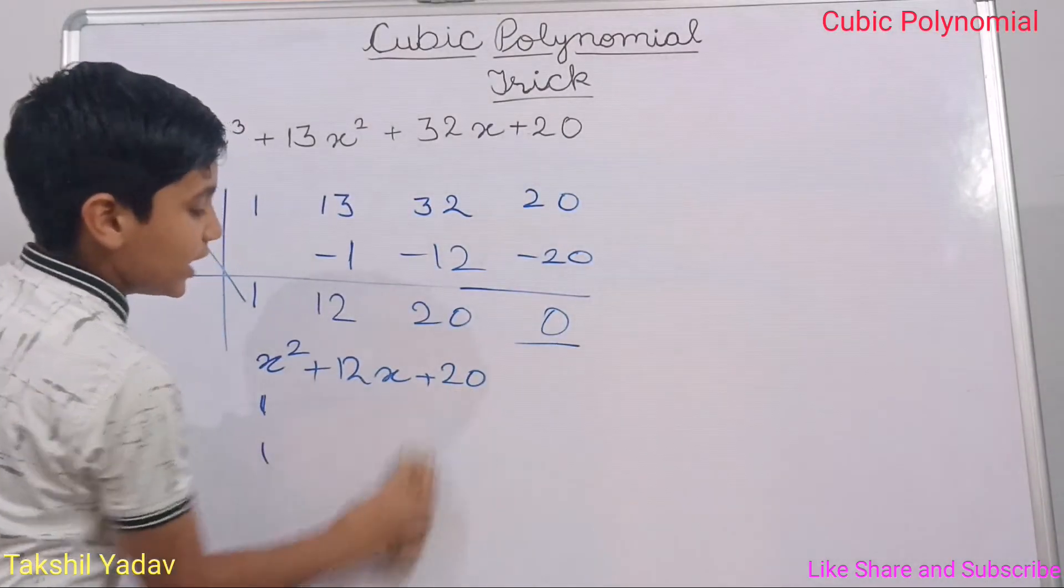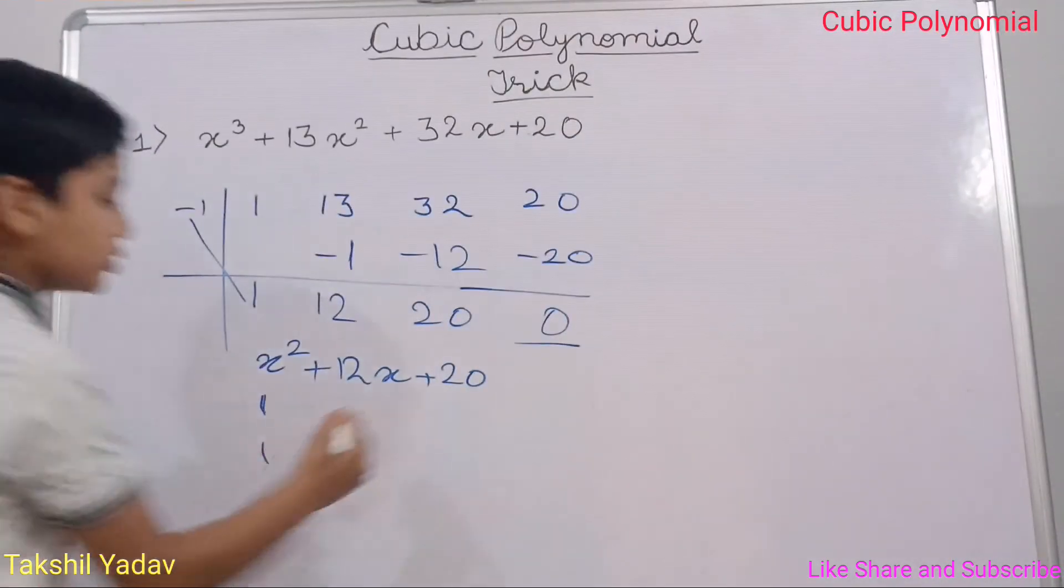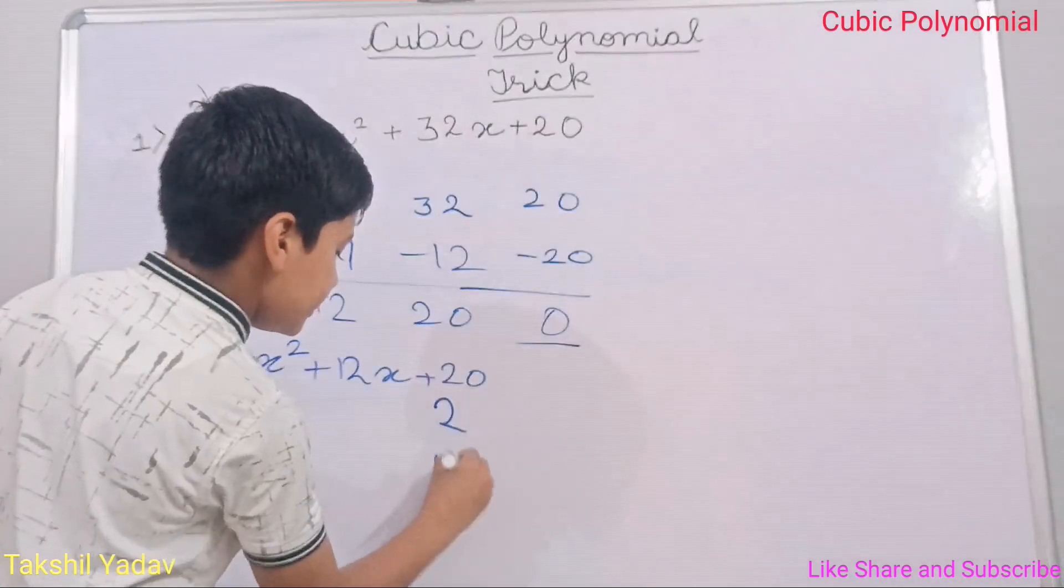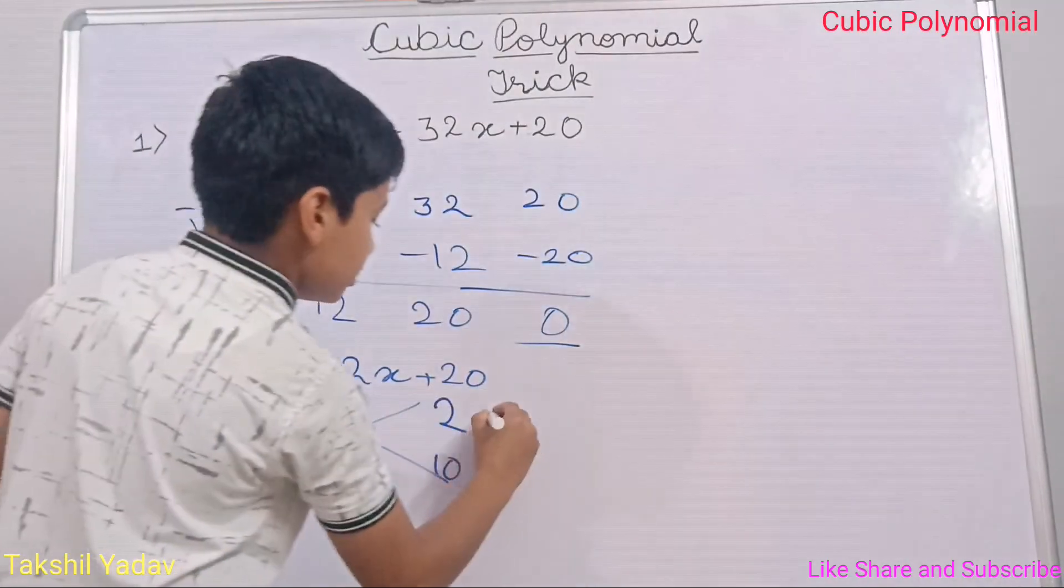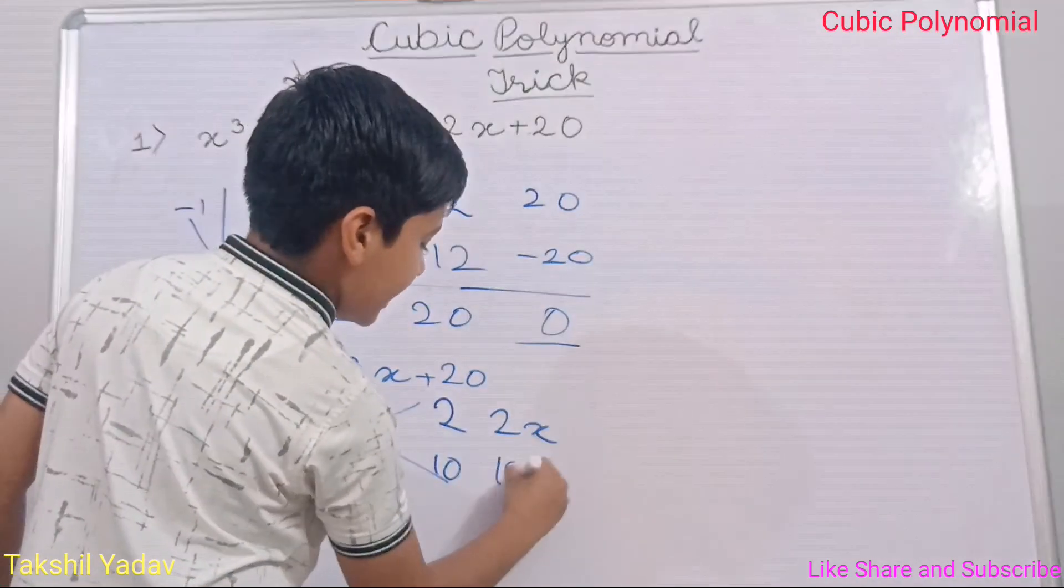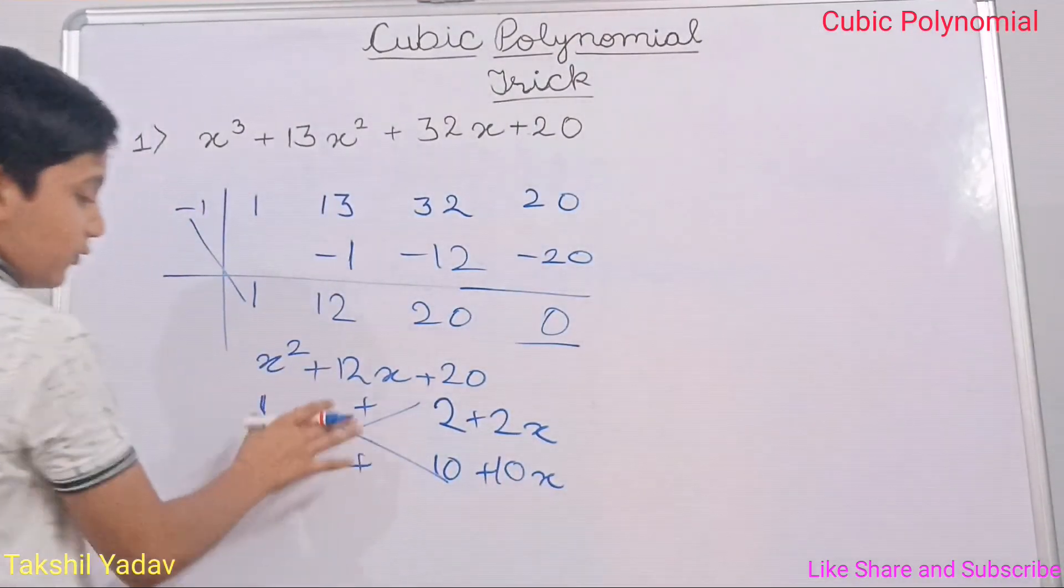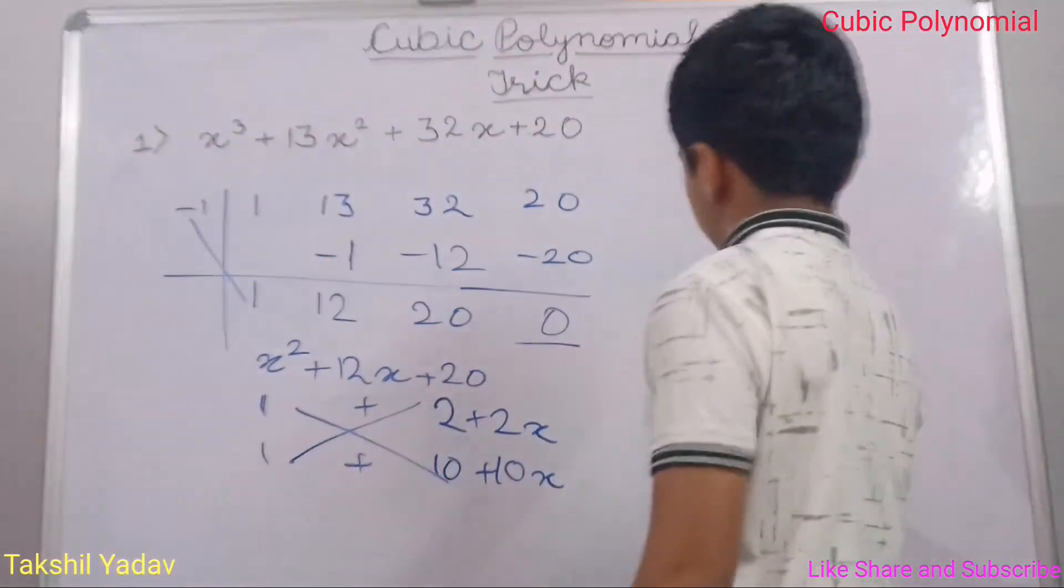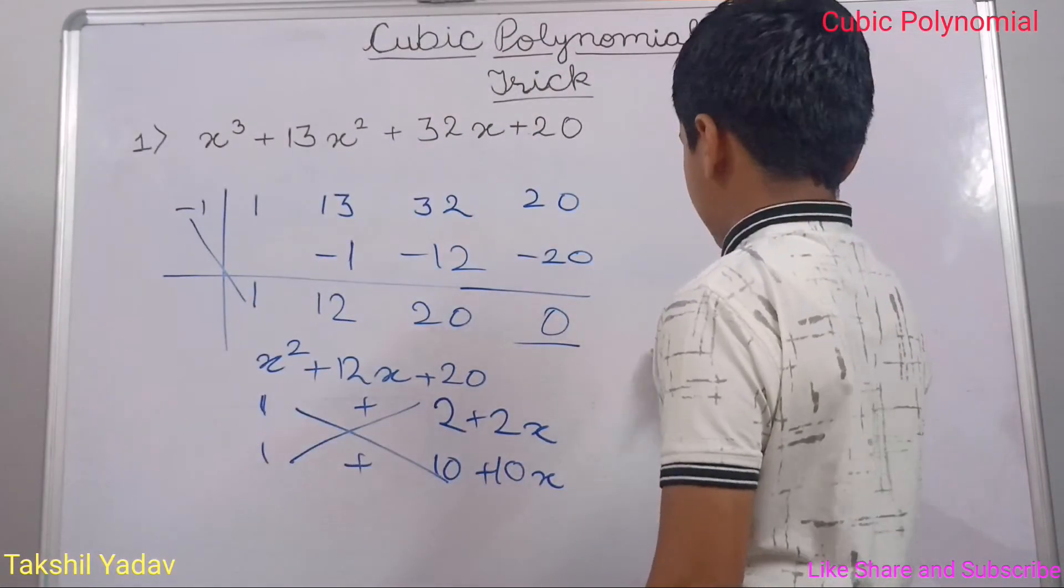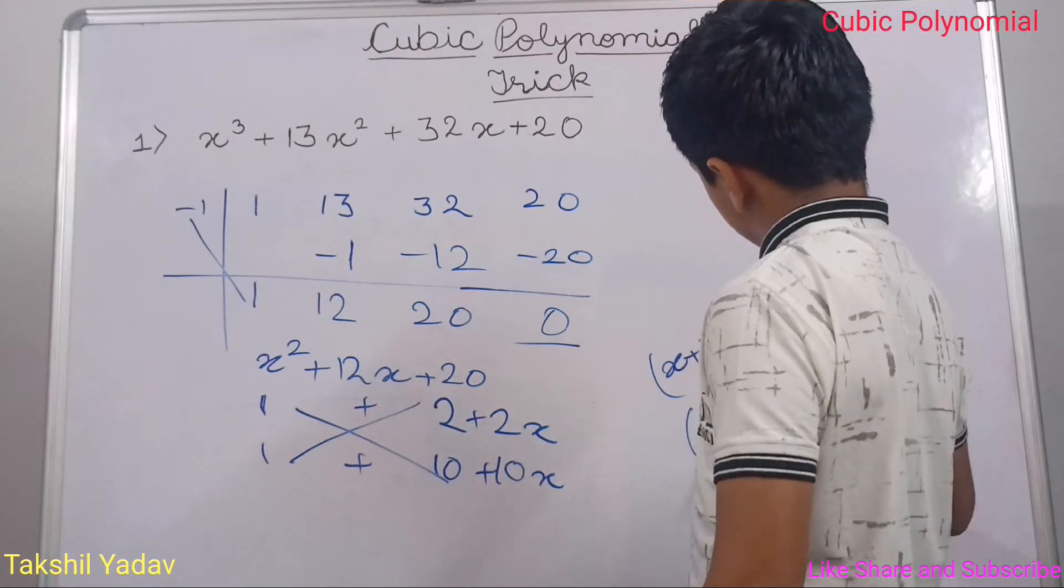Then what other factors can we use? Well, the factors are 2 and 10, right? So I will use 2 and 10. Here it goes. 2x, 10x, positive, positive, same signs here. Now, the factors are x + 2 and x + 10.